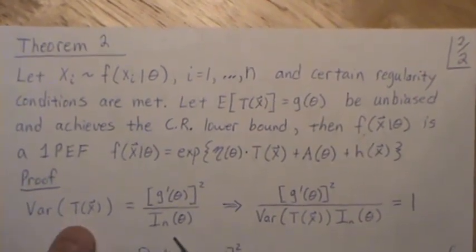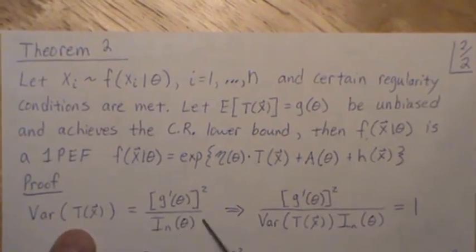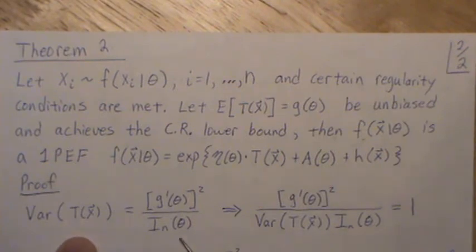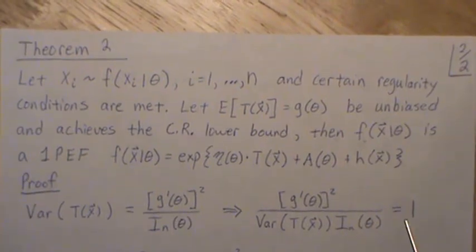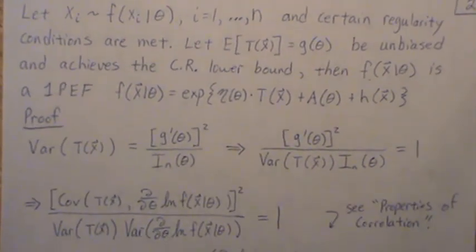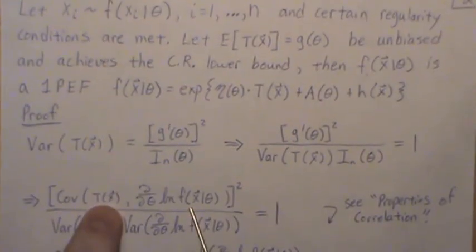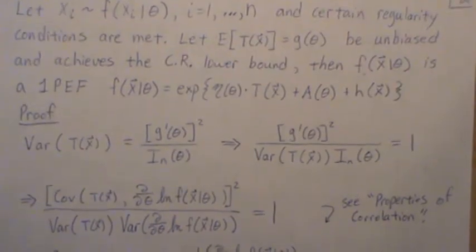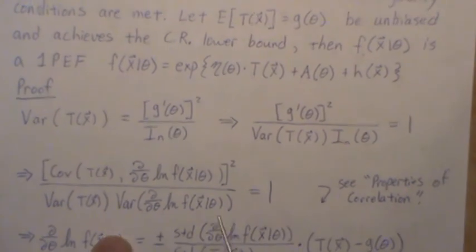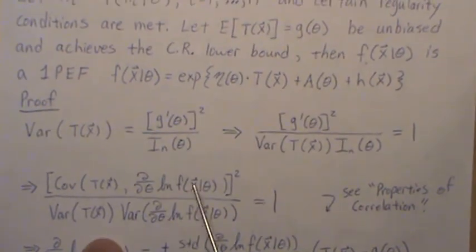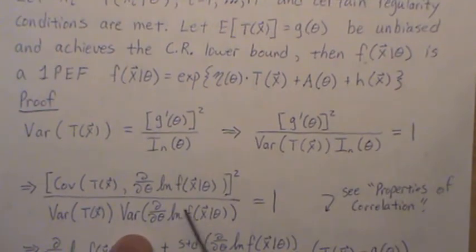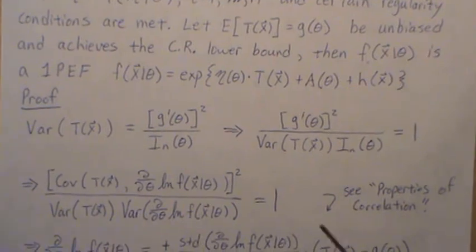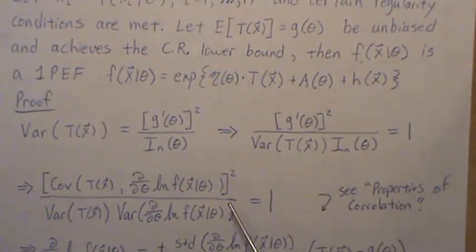Let's prove that. If it achieves the Cramér-Rao lower bound, the variance equals this constant, right? We divide both sides by the variance and get this, then work backwards. G prime of theta is the covariance between these two variables. The variance is here, and the Fisher information of sample size n is the variance of the derivative of the log likelihood. This is essentially correlation squared, equal to 1 — perfect correlation. There is an exact linear relationship between these two random variables.